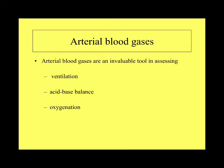Arterial blood gases are invaluable in assessing ventilation, acid-base balance, and oxygenation. We get a lot of information from these blood gases, and they help direct us as perfusionists to take certain actions behind the pump to maintain our values within normal limits. Today I'm going to talk mostly about blood gases in a generic sense. Next week we'll put it in context for the perfusionist, but for now I want you to learn about arterial blood gases and their interpretation.